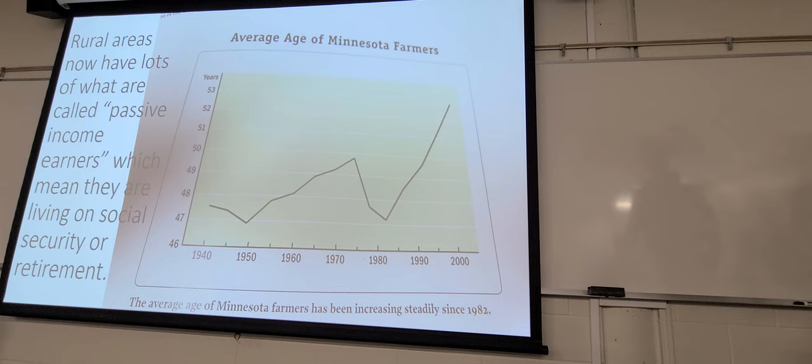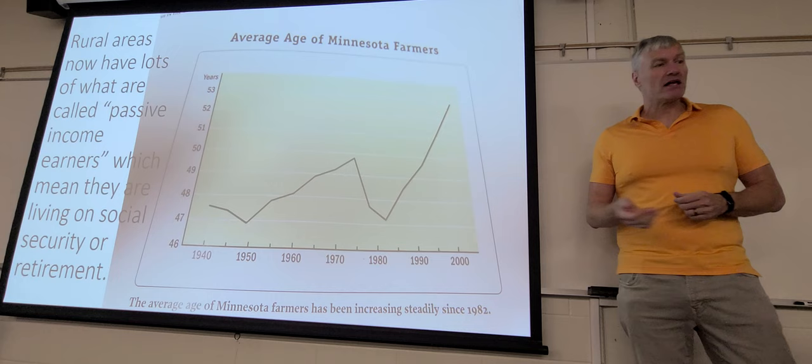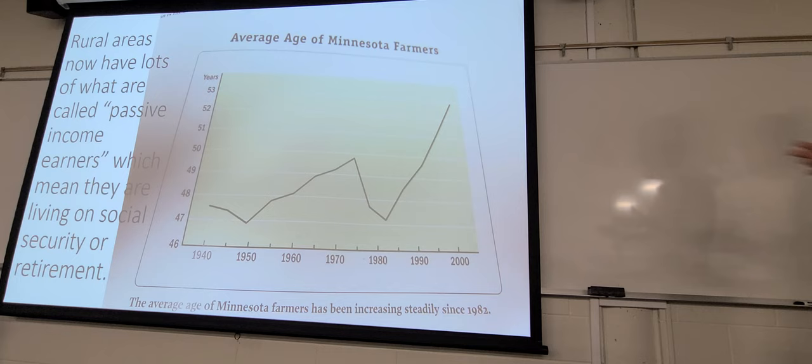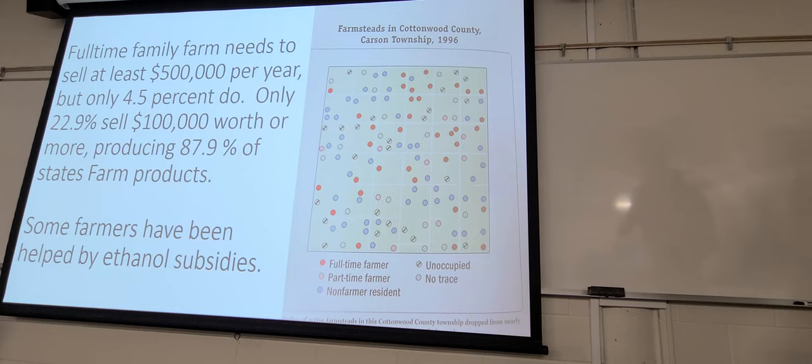Average age of Minnesota farm owners, as you see, it's been going up since 1980. I don't know why it went down for a while there. Anyway, a lot of rural areas have what are termed passive income earners, which means they're living on Social Security, they're living on retirement, they're doing some amount of farming that they can, but these trends continue today.